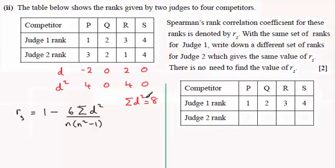The only way I can get the sum of d squared equaling 8 is to create the differences between the ranks with these values: minus 2, 0, 2, 0, in maybe another order, but where can we get that?